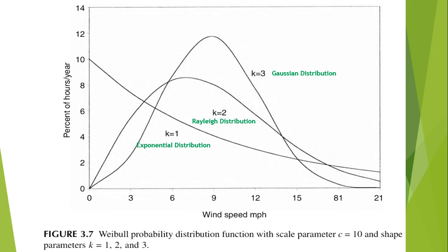This is the graph of Weibull probability distribution function with the scale parameter c and the shape parameters of 1, 2, and 3. For the shape parameter of 1, the curve represents an exponential distribution function. For the shape parameter of 2, the Weibull probability distribution resembles Rayleigh distribution. And for k equal to 3, it is approximated by the Gaussian distribution function.